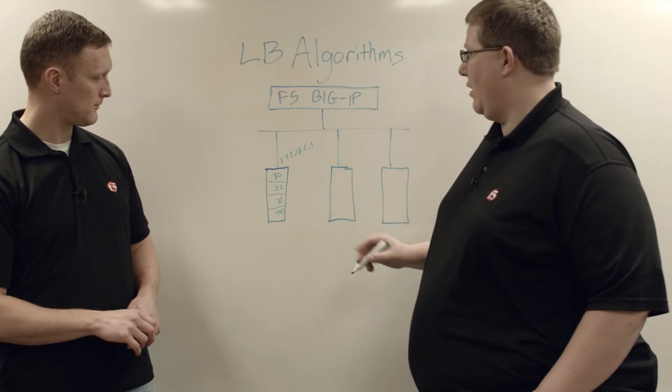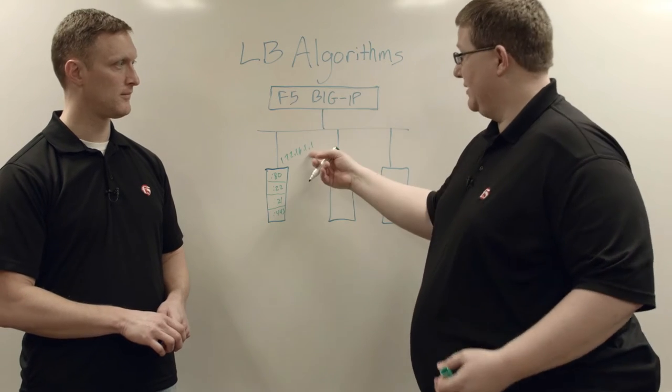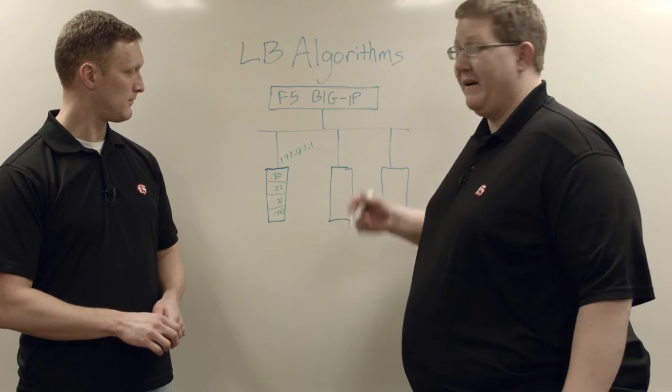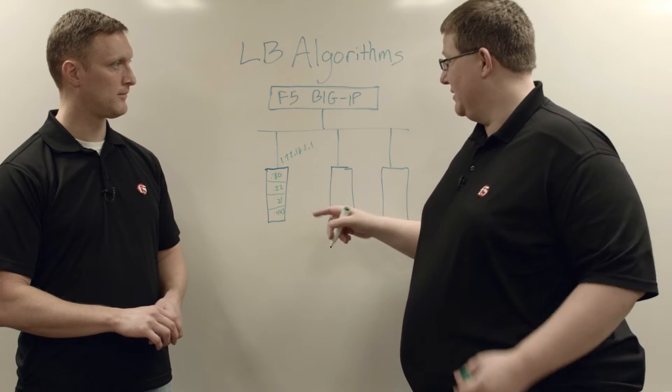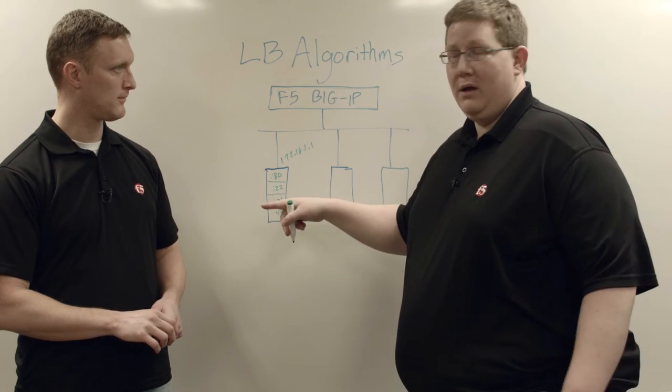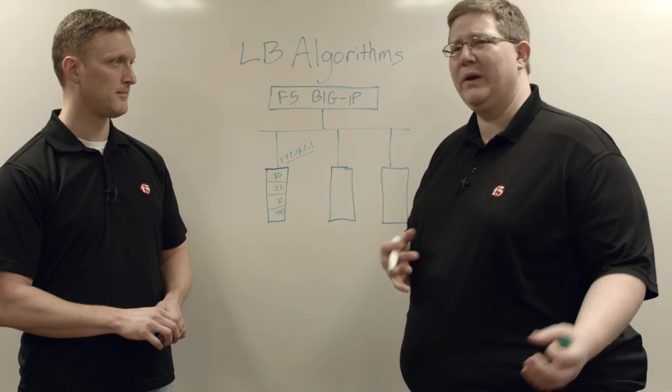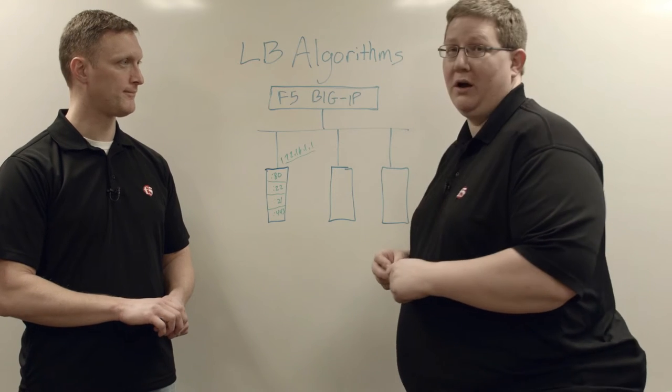And so if all of those are different pool members, then I can load balance differently to this node if I select an algorithm that is a member. So it will distribute all the traffic based only on that port between pool members instead of just the IP. And as we go through the different algorithms, we'll talk about that.